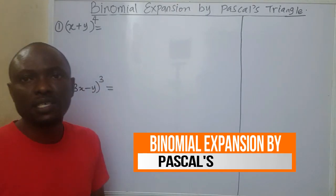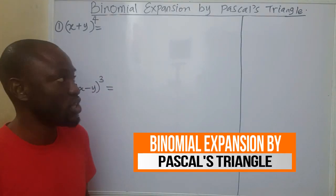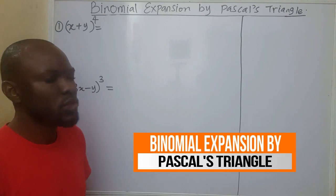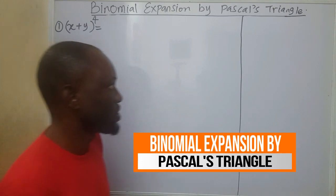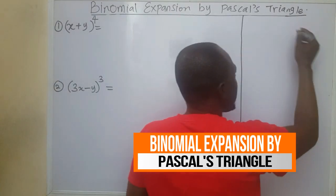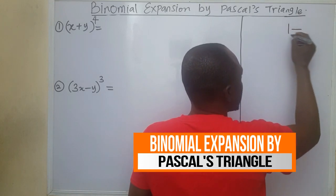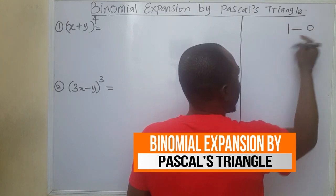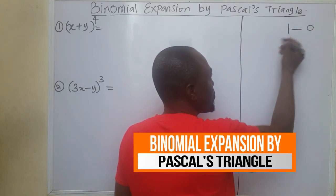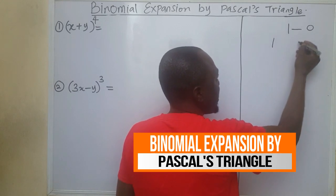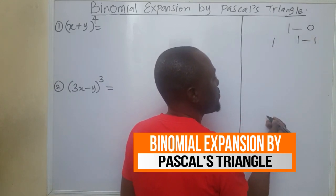We want to solve this by binomial expansion using Pascal's Triangle. This is how Pascal's Triangle works. For power of 0, I have this coefficient. For power of 1, I'm going to bring 1 here and 1 at the end. This is power of 1.